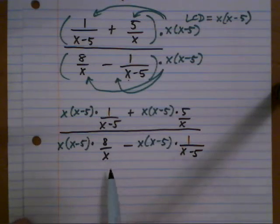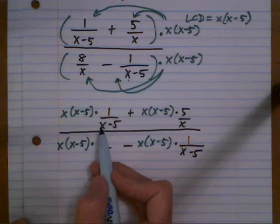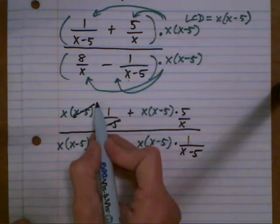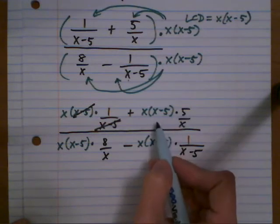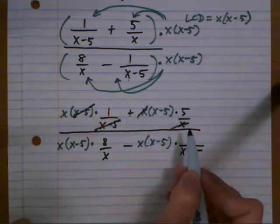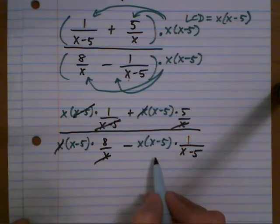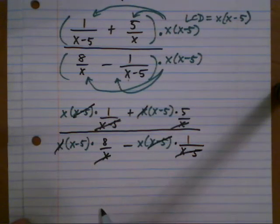And now we want to divide out common factors. On the top left we have x minus 5 and x minus 5, those divide out to 1. And on the top right we have x and x. Bottom left, x and x. And bottom right we have x minus 5, x minus 5.